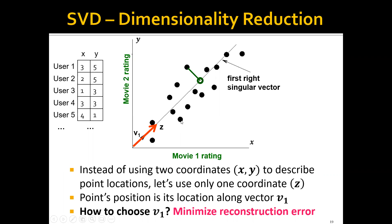We can see that now for each user or each point, we need to use two coordinates to represent them. Instead of using two coordinates to describe the point locations, let's use only one coordinate, Z. In this new coordinate system of Z, each point's position will be its location along the vector V1.